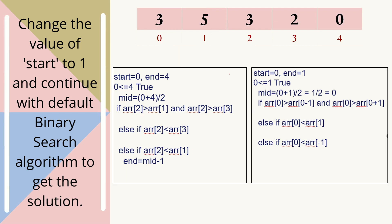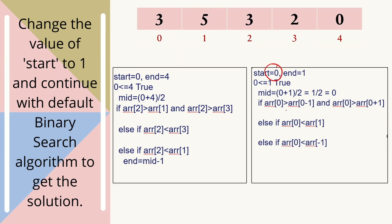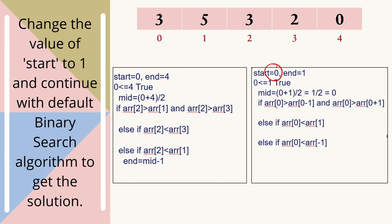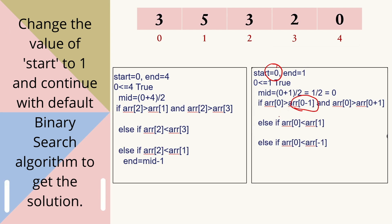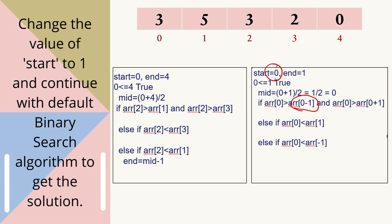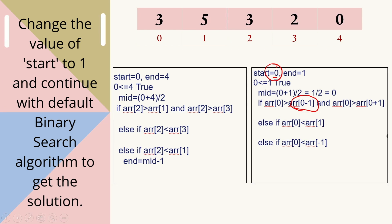As we can see, setting start to 0 creates an issue where we check the midpoint's comparison with the element at index -1, which does not exist and will raise an error. To fix this, we need to make a small change: instead of initializing start with 0, we set its value to 1.